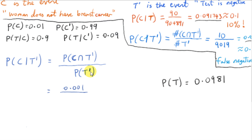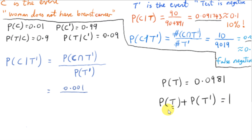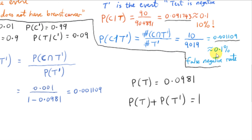For P(T'), we use the fact that P(T) + P(T') = 1, since a woman either tests positive or negative. We found P(T) = 0.0981, so P(T') = 1 − 0.0981 = 0.9019. To six decimal places, P(C|T') = 0.001 / 0.9019 ≈ 0.001109.